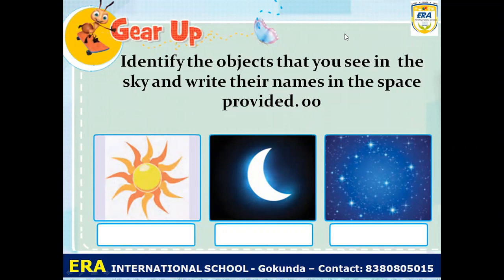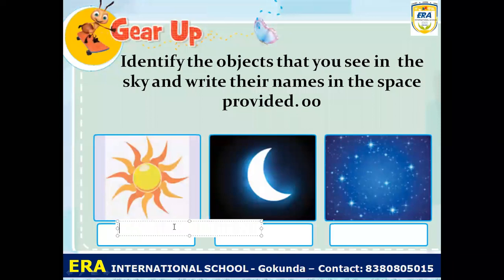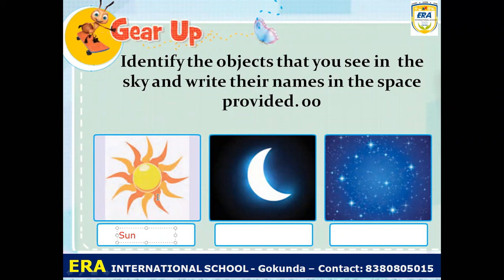In the first picture, that is the picture of the sun. You have to write here the spelling of sun. This is the sun, and the sun is the one and only source of energy in our solar system.